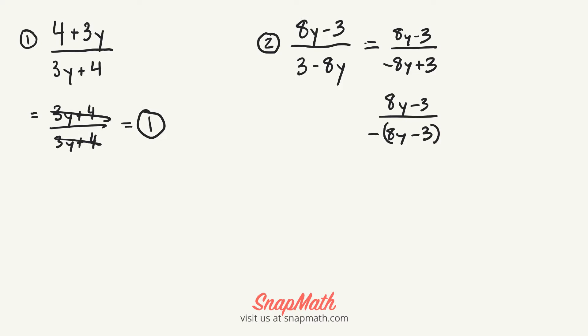So I factor out a negative and this negative and then parentheses 8y minus 3 is the same thing as negative 8y plus 3. Now I can cancel these out and I'm left with 1 on top and 1 on the bottom. So my answer is going to be negative 1. Alright?